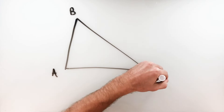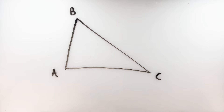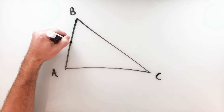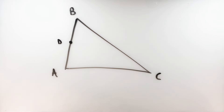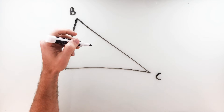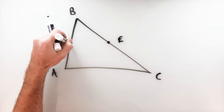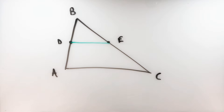So a mid-segment of a triangle — let's say we've got a triangle, call it triangle ABC. A mid-segment is a segment that connects the midpoints of two sides of a triangle. So let's say we have side AB; the midpoint of that segment we'll call D. Then on side BC, the midpoint is point E. The mid-segment is that segment connecting those two midpoints — that green line right there.